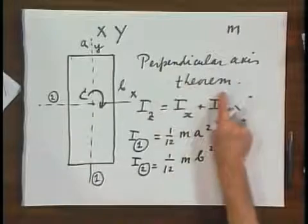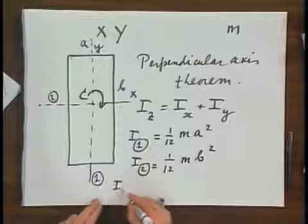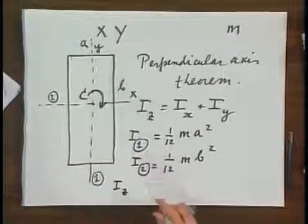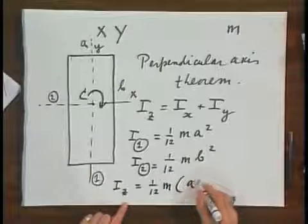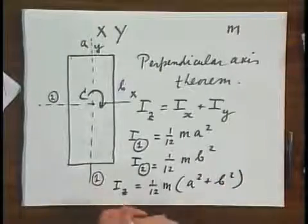So what this perpendicular axis theorem is telling you, if this is a thin sheet, that the moment of inertia rotation about the z axis perpendicular to the paper equals 1 twelfths m times a squared plus b squared. And if you're lucky, you may find this result in a table. If not, you may have to derive it, as I just did.